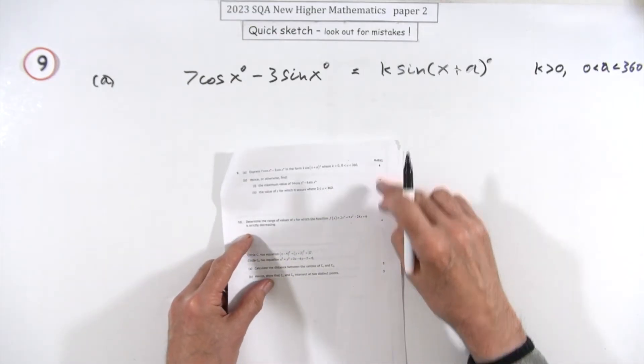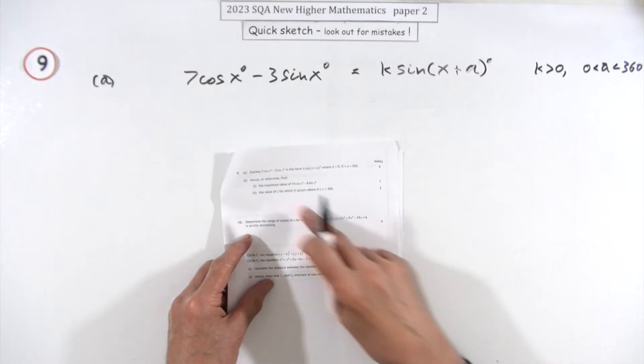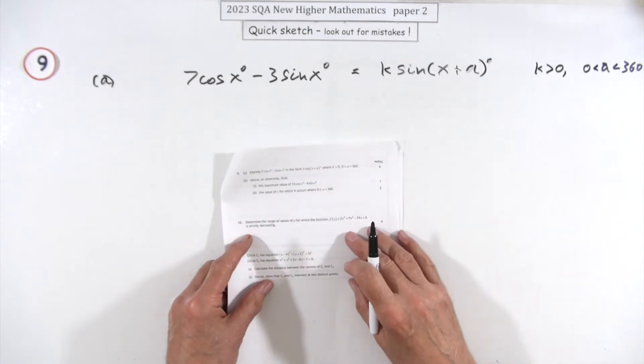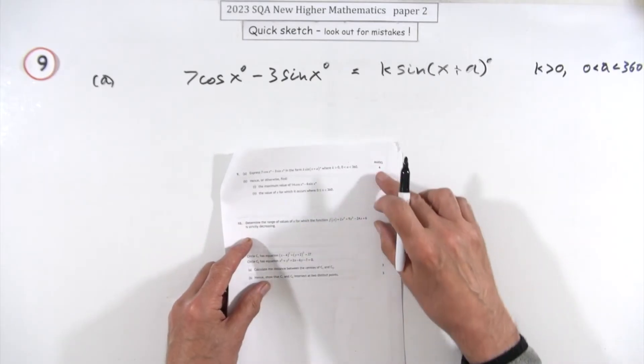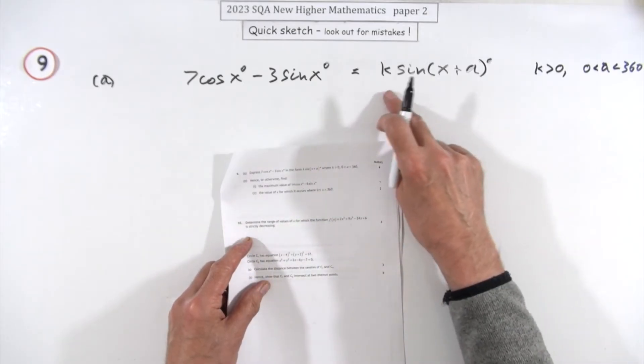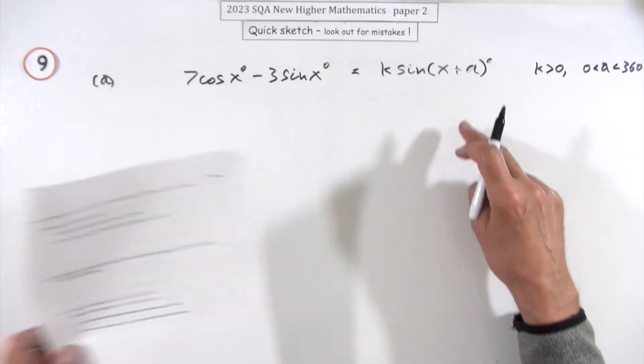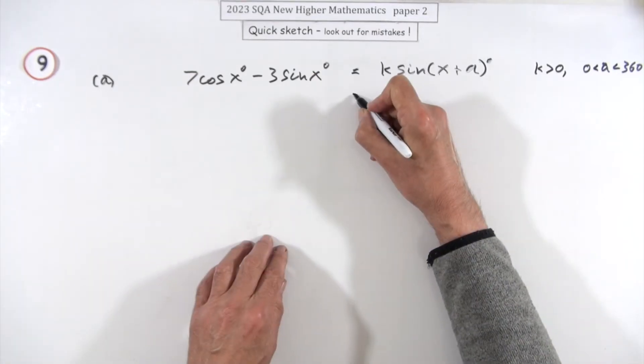Number nine then, seven marks here. The wave equation one and then a second part where you use that to find the maximum value and when it occurs. The first part is to write this in the form k sin(x + α). Well, you just expand that.